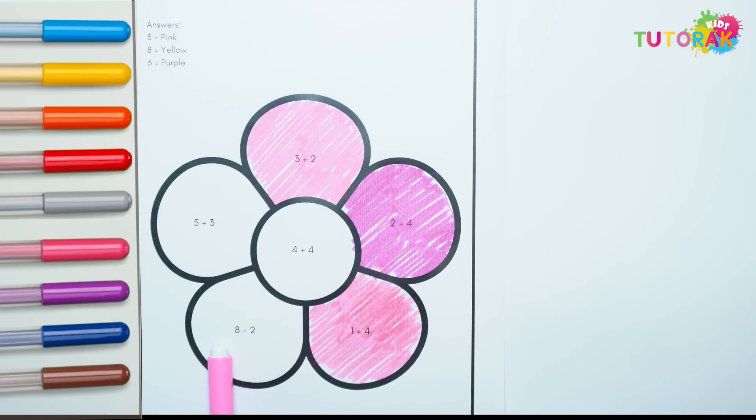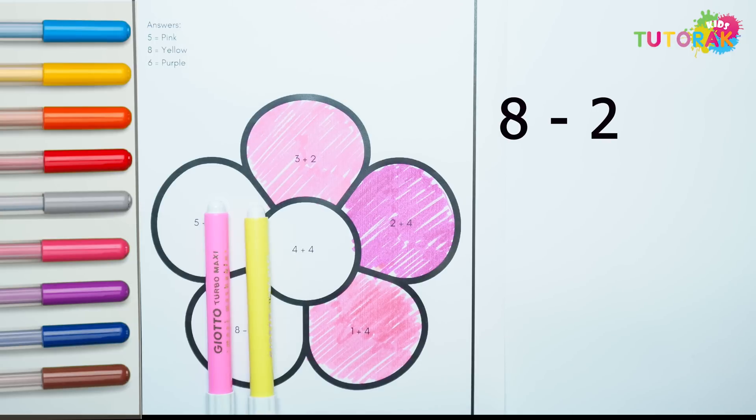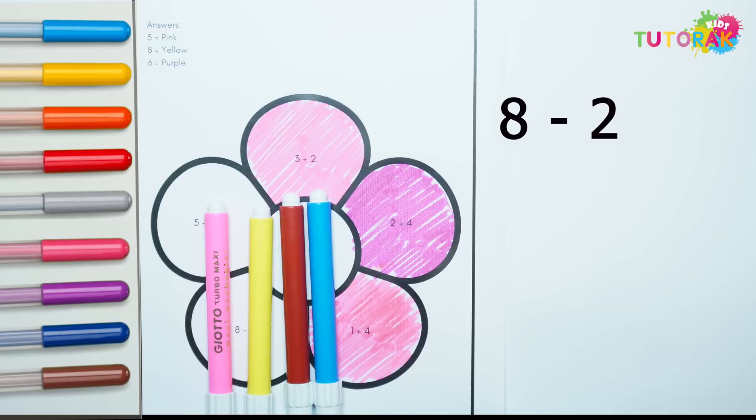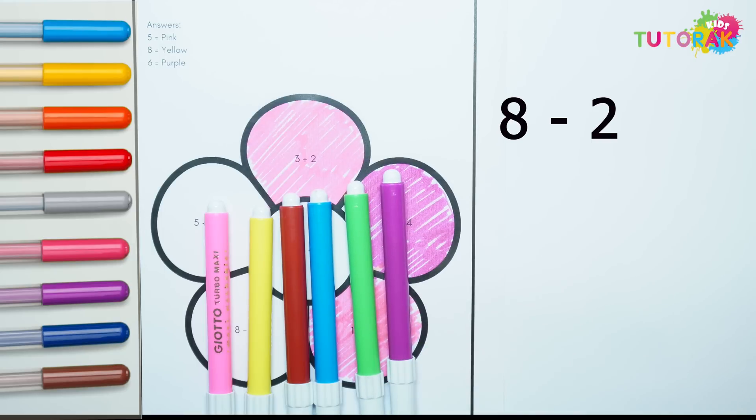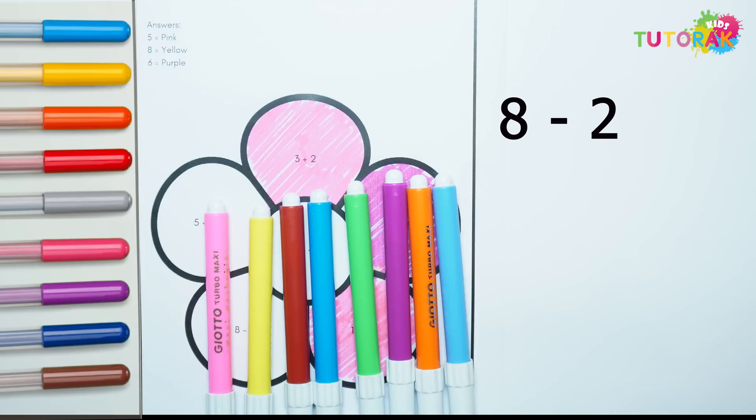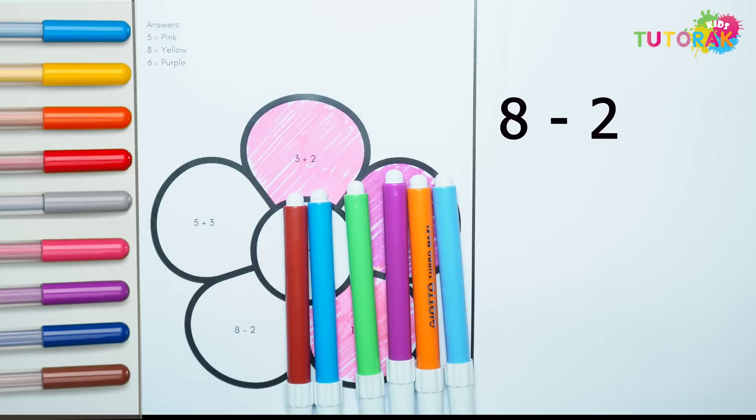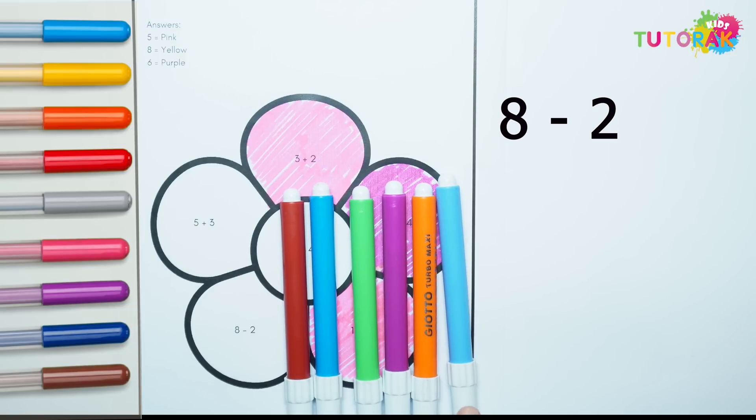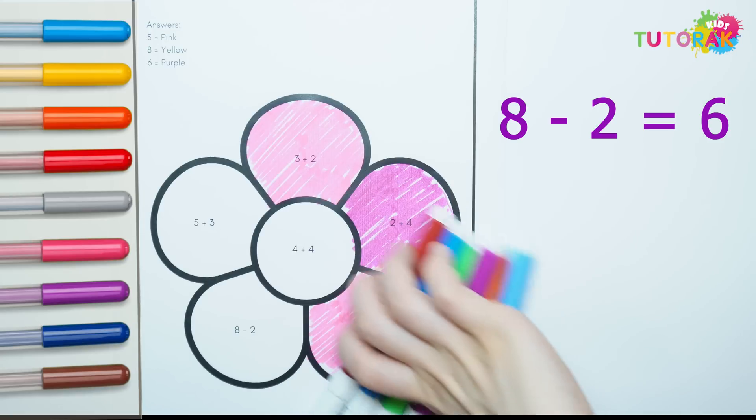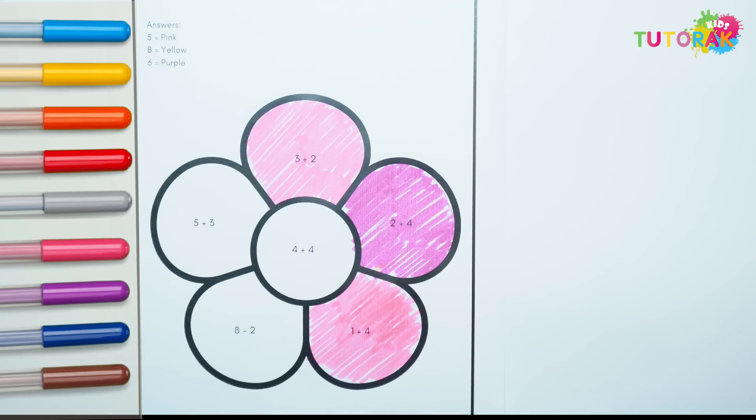The next sum is 8 minus 2. 1, 2, 3, 4, 5, 6, 7, 8. 8 minus 1, 2. How much do we have left? 1, 2, 3, 4, 5, 6. The answer is 6, and that is color purple.